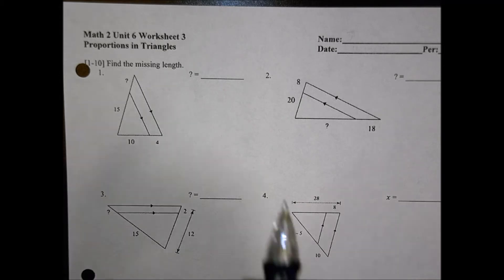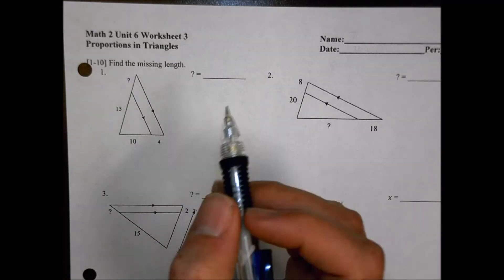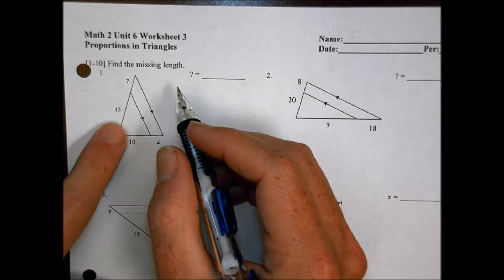Alright, here we are, Math 2, unit 6, worksheet number 3, looking at proportions and triangles and finding missing links. So let's set them up this way.